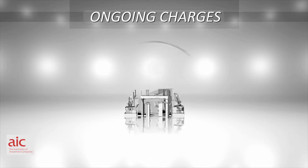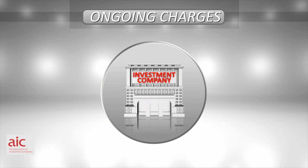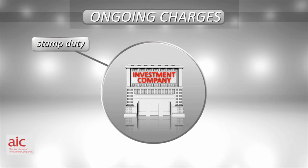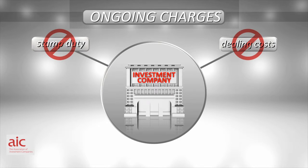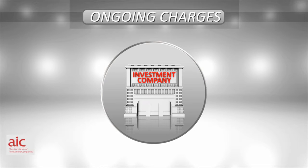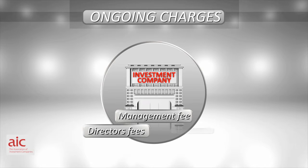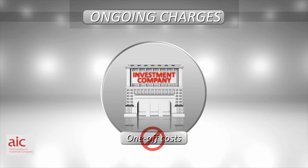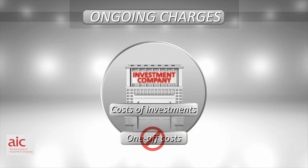Ongoing charges only looks at the costs inside the investment company, so it does not include the costs you incur in buying the shares, such as stamp duty and other dealing costs. Ongoing charges only includes regular recurring costs, such as the management fee, director's fees, audit fees and so on. One-off costs are excluded, as are the costs incurred by the company in acquiring investments.